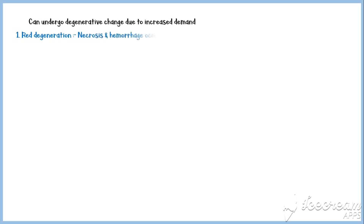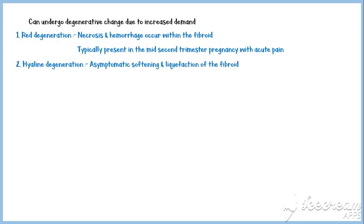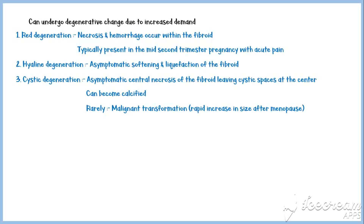Fibroids can undergo degenerative change due to the increased demand of the proliferating smooth muscle cells. Three forms of degeneration are recognized. Red degeneration, where necrosis and hemorrhage occur within the fibroid — these patients typically present in the mid-second trimester of pregnancy with acute pain. Hyaline degeneration, characterized by asymptomatic softening and liquefaction of the fibroid. And cystic degeneration, characterized by asymptomatic central necrosis of the fibroid, leaving cystic spaces in the center. With time, they can become calcified.